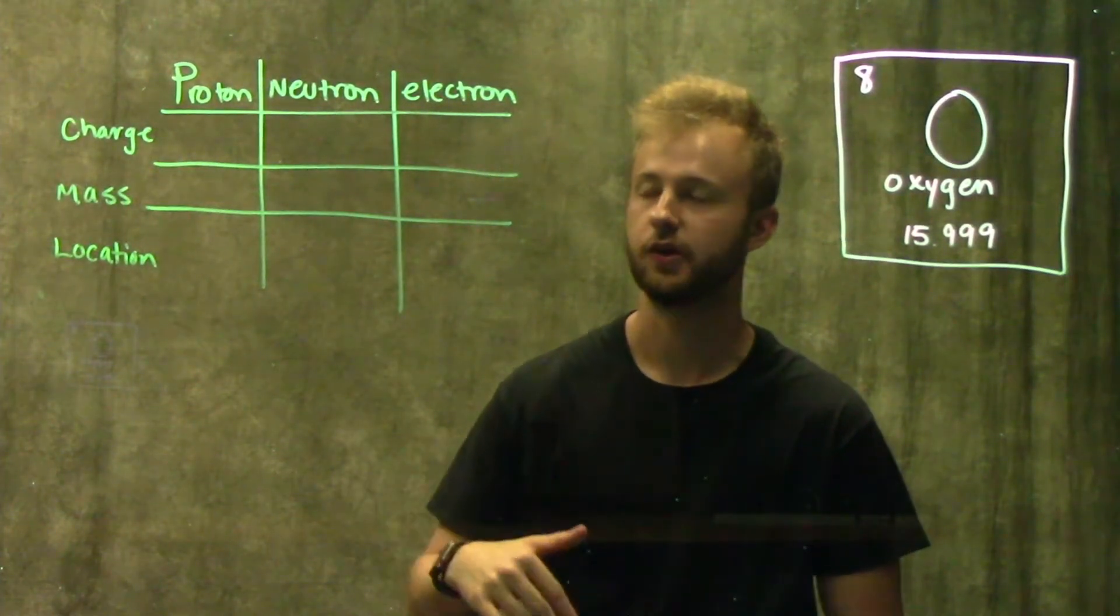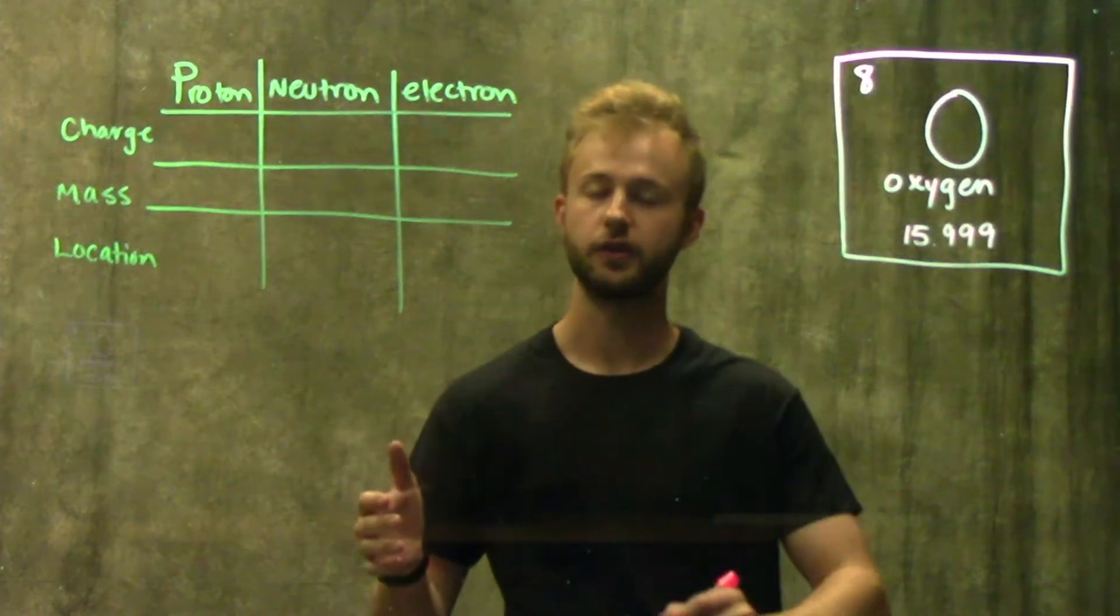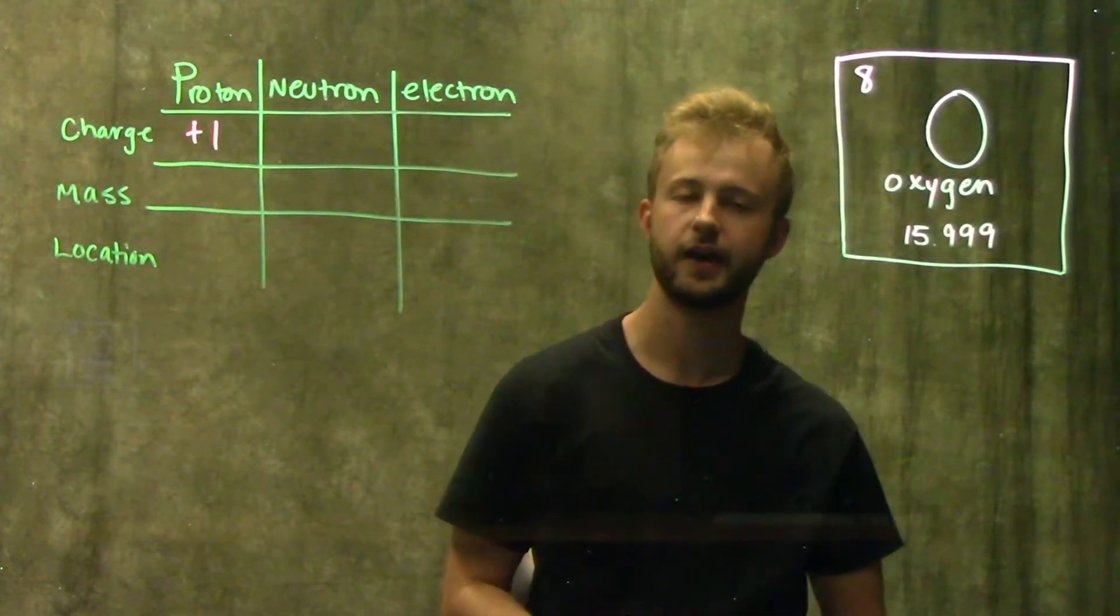So now we're going to talk about some of the properties of these particles. We're starting off with charge. The charge for a proton is always going to be a positive one. And so for any atom to be neutral, the number of positive charges has to be equal to the number of negative charges.